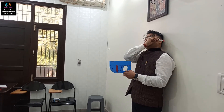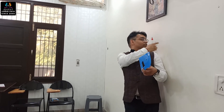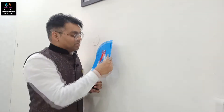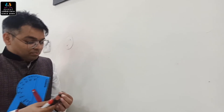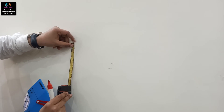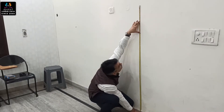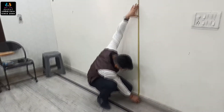Now we have to find the height of the clinometer from the ground, which is equivalent to my eye level. I have marked this point on the wall and measured the distance from that point down to the ground. The height is 60 inches.